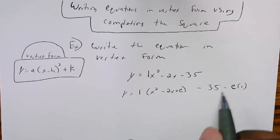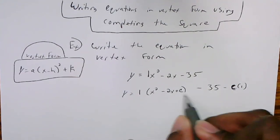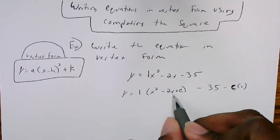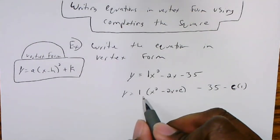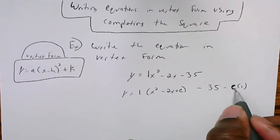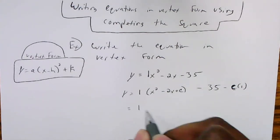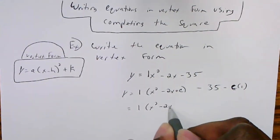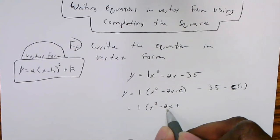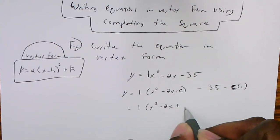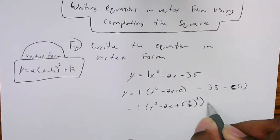Whatever the c value is, you put it on the inside of the parentheses and put it outside the parentheses so they cancel each other out — one is positive on the inside, one is subtracted on the outside — and multiply by the a value to keep things balanced. To find c when completing the square, c should be half of the coefficient of x, then squared. So c is (negative 2 divided by 2) squared, which is (negative 1) squared equals 1.